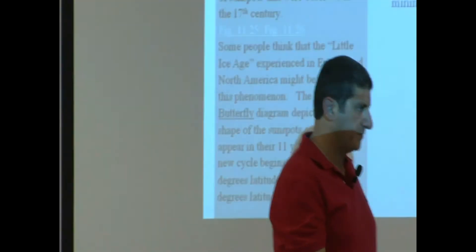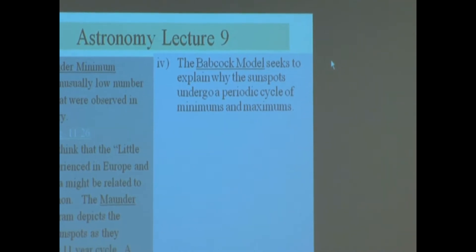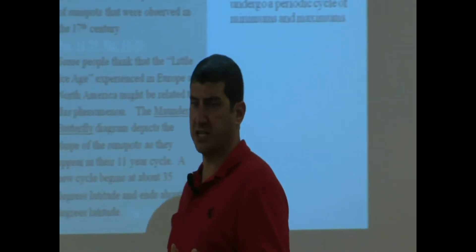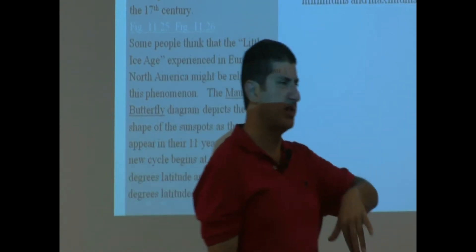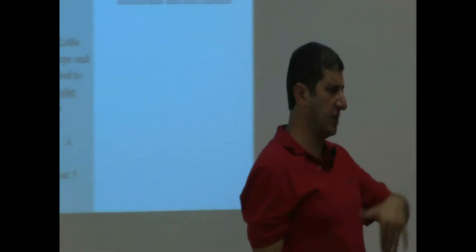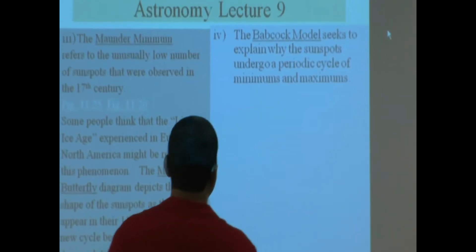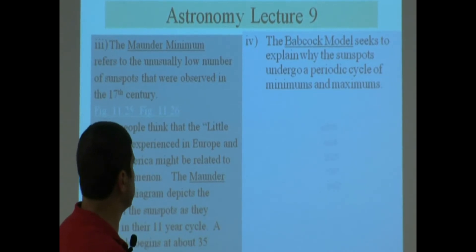The Babcock model — what is this? The Babcock model is proposed by a scientist named Babcock. He wanted to understand and explain why there is such a thing as the sunspot cycle. Why every 11 years the magnetic field is twisting and turning, changing. Why are we going through a sunspot maximum and a sunspot minimum every 11 years? So it seeks to explain why sunspots undergo a periodic cycle of minimums and maximums.